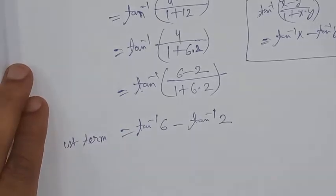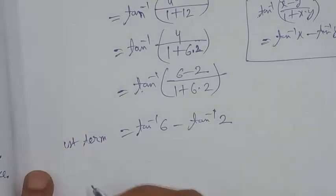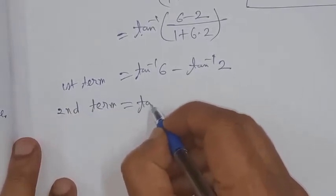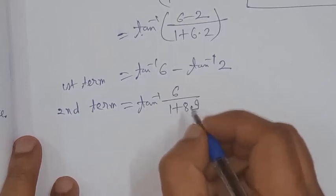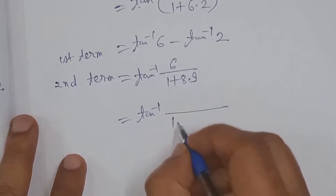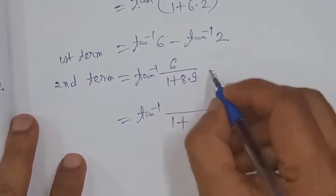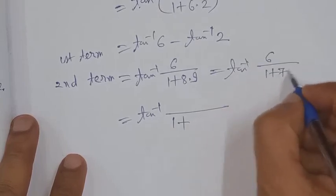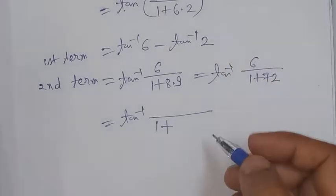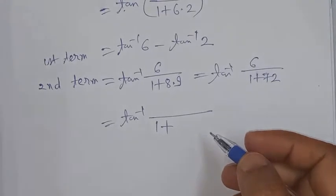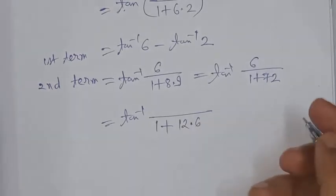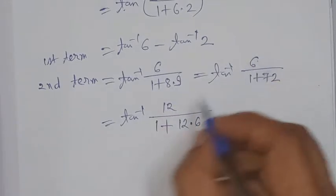Now for the second term, tan⁻¹(6/(1+8·9)). We have tan⁻¹(6/(1+72)). The two factors are 12 and 6, and the difference is 6. So this equals tan⁻¹12 - tan⁻¹6, which is the value of the second term.